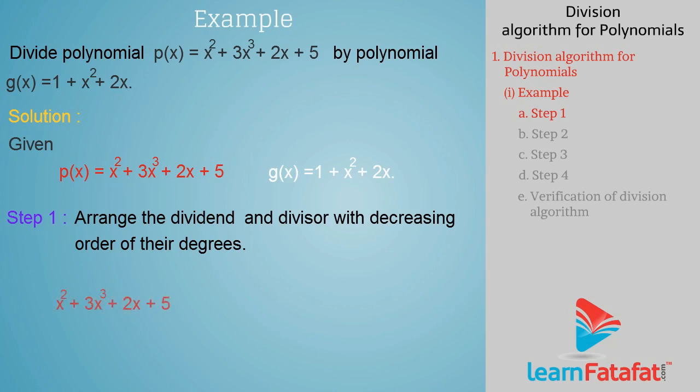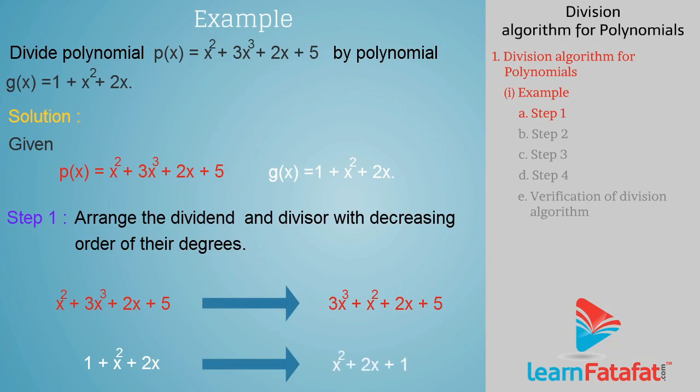Step 1: Arrange the dividend and divisor in decreasing order of their degrees. That is, x squared plus 3x cubed plus 2x plus 5 can be arranged as 3x cubed plus x squared plus 2x plus 5, and 1 plus x squared plus 2x can be rearranged as x squared plus 2x plus 1.